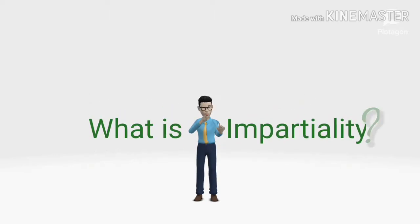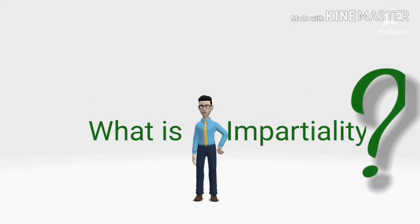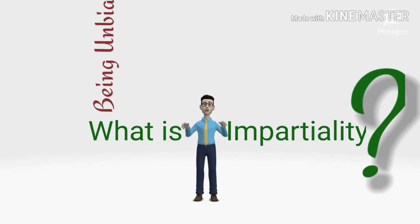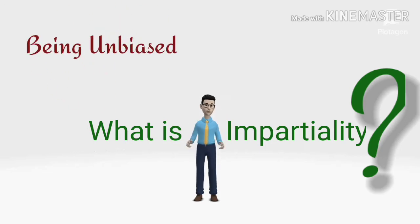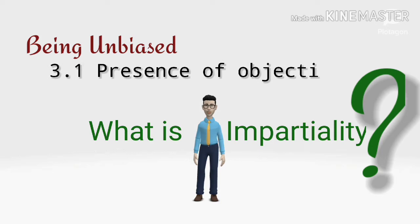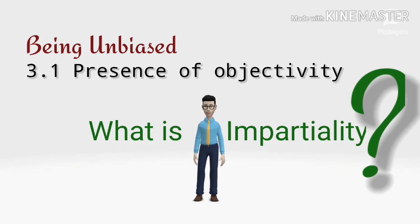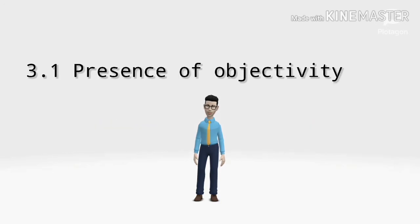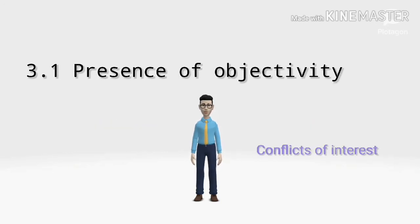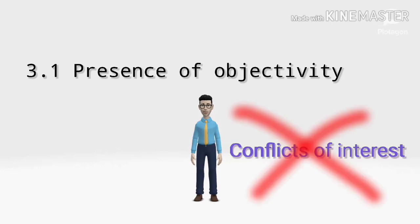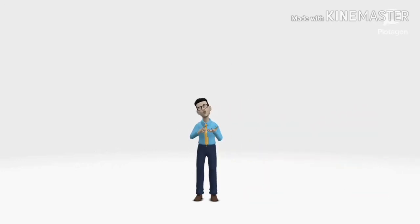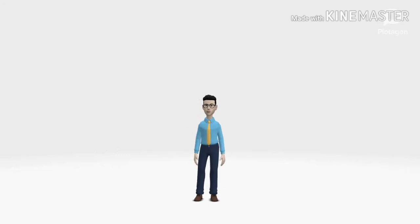What is impartiality? In general terms we can say that it means to be unbiased. As per clause number 3.1, impartiality means presence of objectivity. In more detail, objectivity means you don't have any conflicts of interest in laboratory activities. Let's think about other synonyms related to the word impartiality so you can get a basic understanding before going deeper.